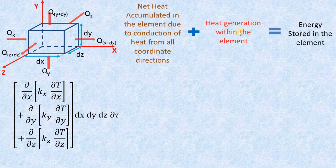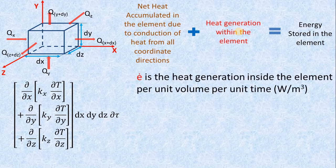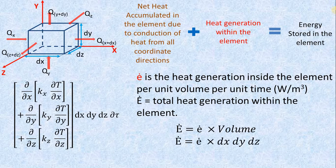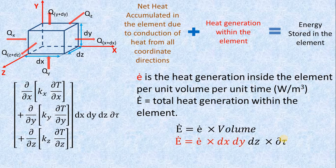Now let's find the heat generation within the element. E-dot is the heat generation per unit volume per unit time. So total heat generation within the element is E-dot times volume, which is E-dot times dx·dy·dz times the time interval dτ.